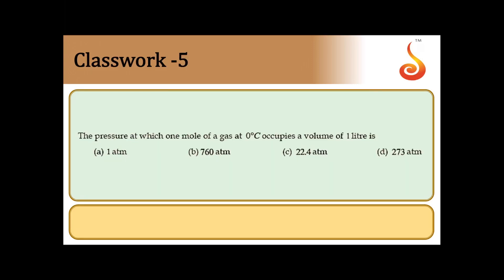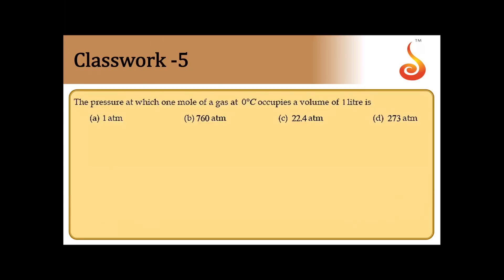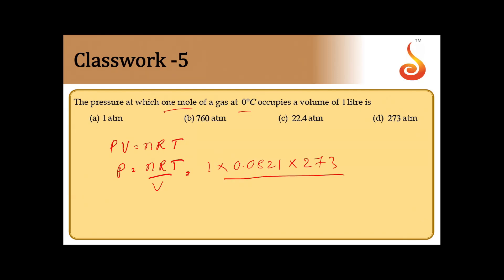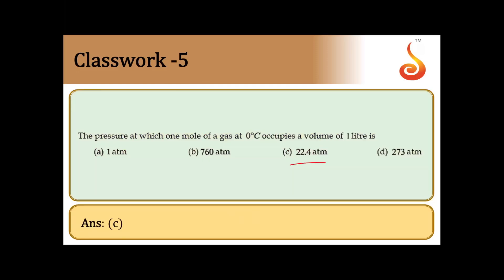Question 5: The pressure at which 1 mole of gas at 0 degrees Celsius occupies a volume of 1 liter. Applying PV = NRT: P = NRT/V = 1 × 0.0821 × 273 / 1 = 22.4 atmospheres. Answer is option C.